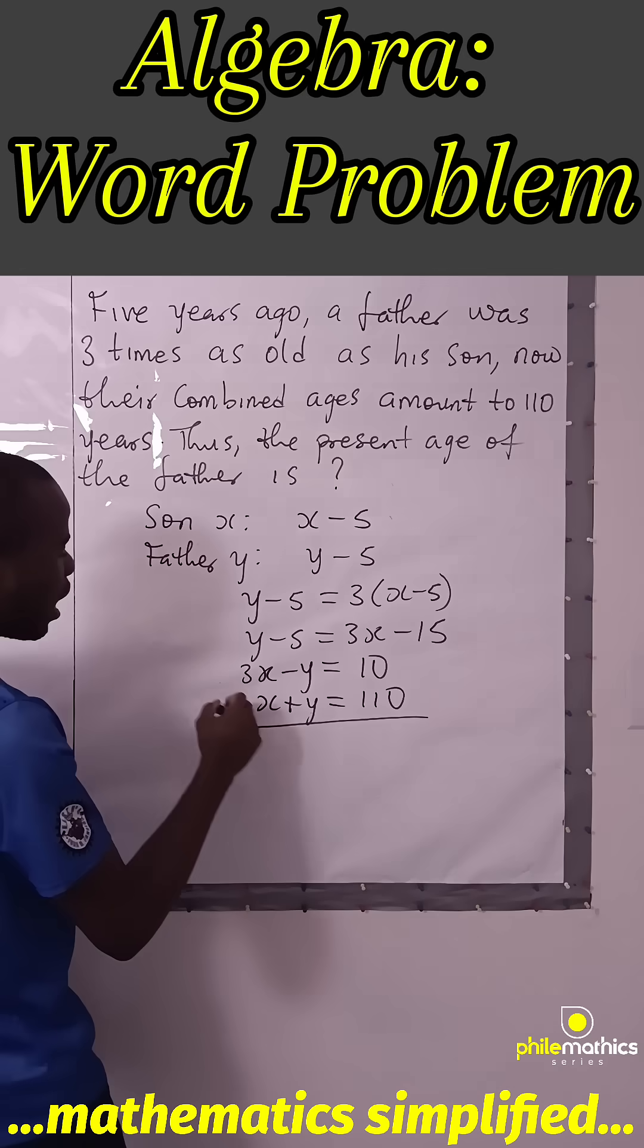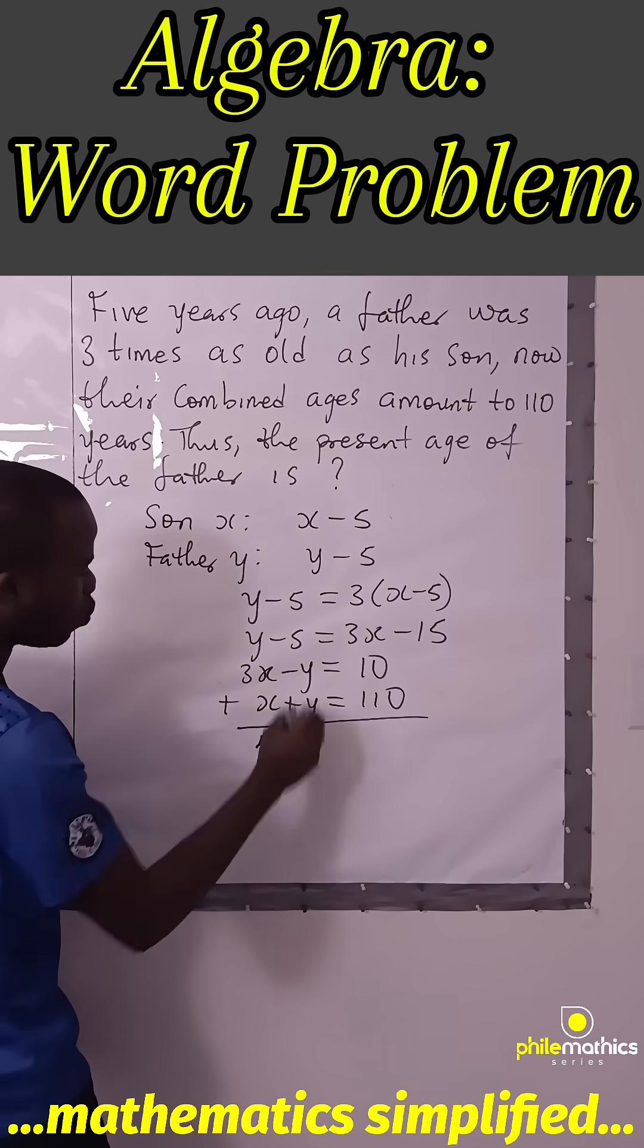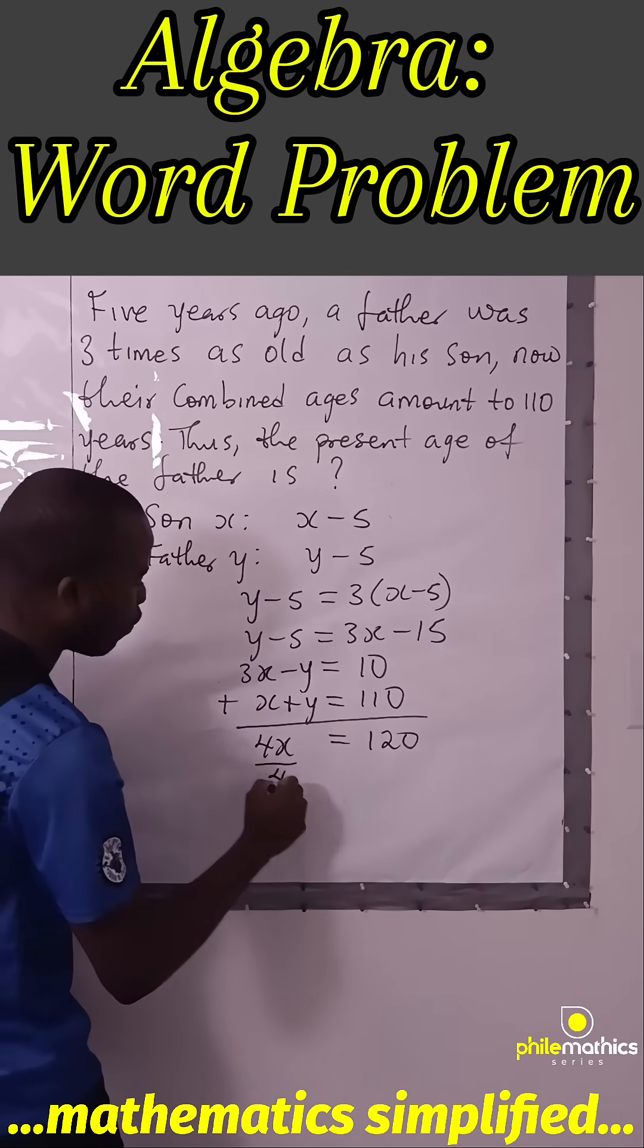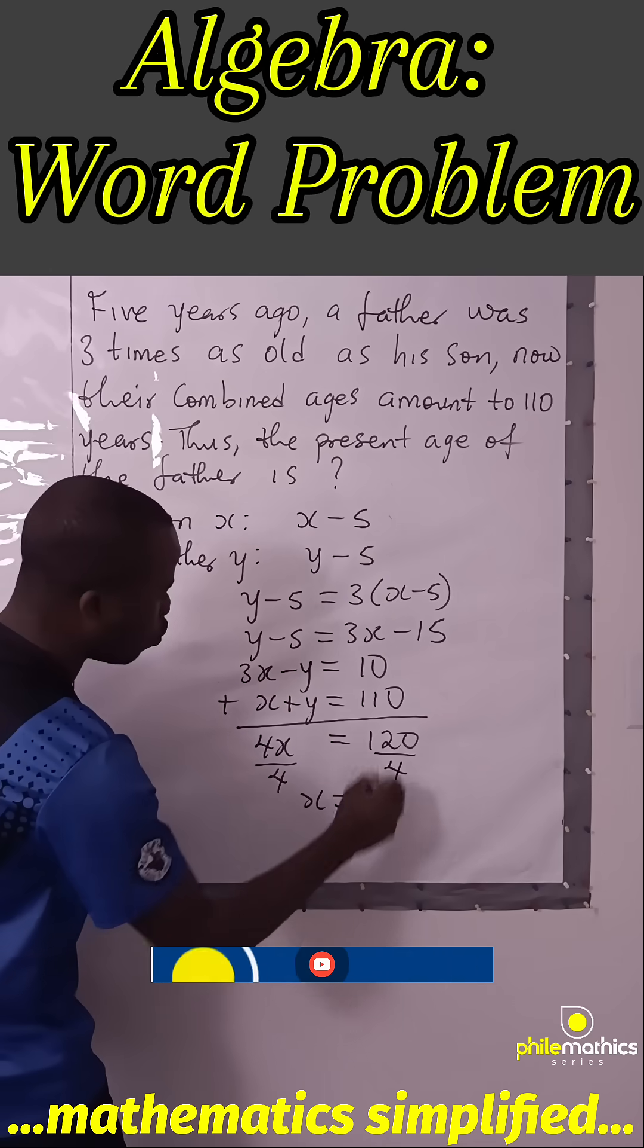So we can add both equations. To add it, by the variable size by four, I will have the age of the son. It will be 30.